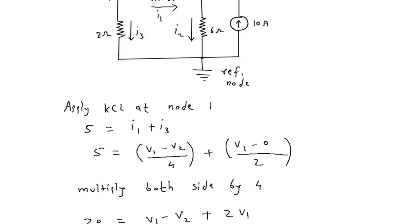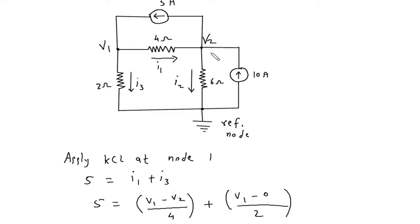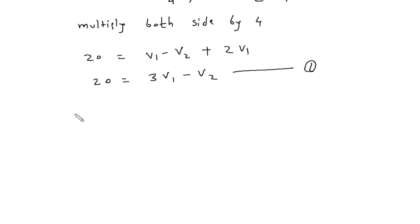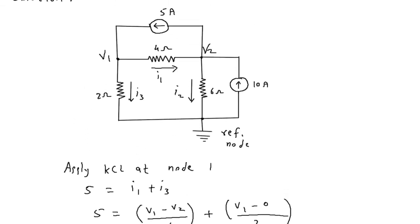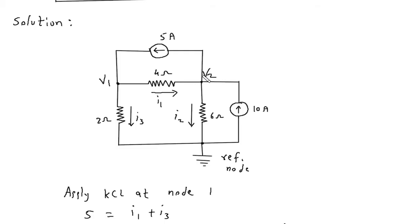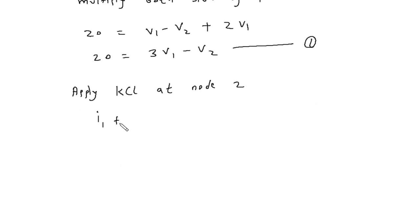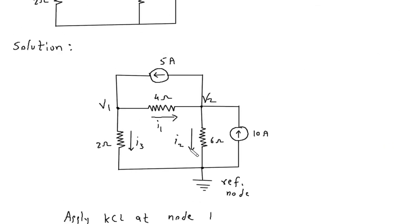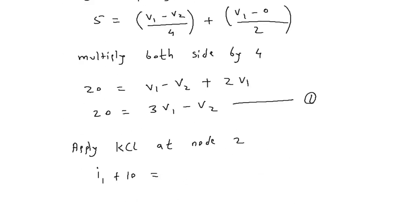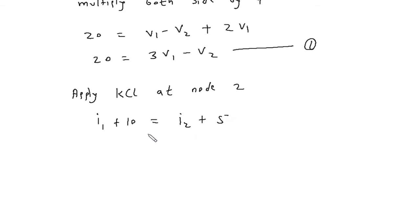Now we will apply KCL at node V2. The entering currents are I1 plus 10, and the leaving current is I2 plus 5. So I1 + 10 = I2 + 5, which gives 5 = I2 - I1.